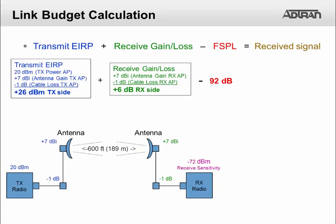We can now calculate our receive signal. We take the transmit EIRP of 26 dBm plus the receive 6 dB minus the 92 dB free space path loss, and our receive signal is negative 60 dBm.